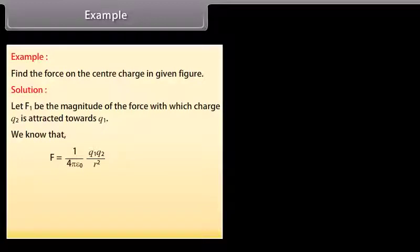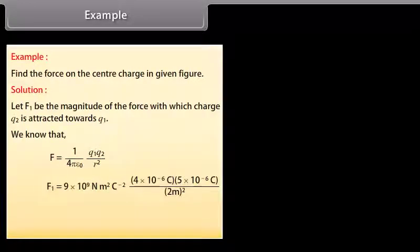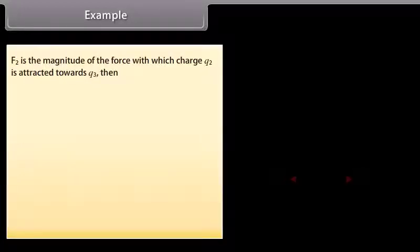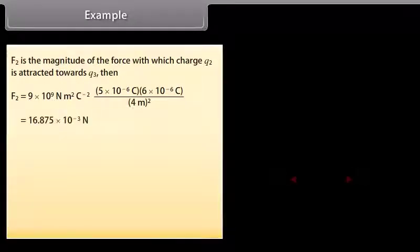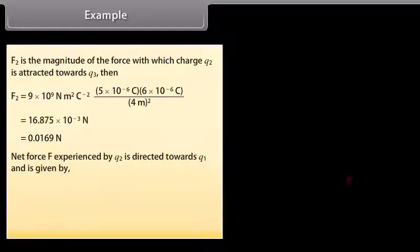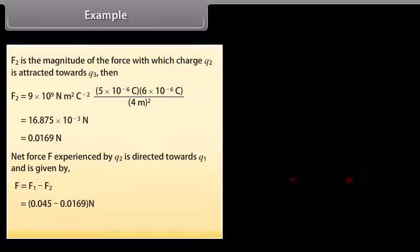Applying the equation F₁ = (1/4πε₀) × q₁q₂/r², we get F₁ = 45 × 10⁻³ N = 0.045 N. F₂, the magnitude of the force with which charge q₂ is attracted to q₃, gives F₂ = 16.875 × 10⁻³ N = 0.0169 N. The net force F experienced by q₂ is directed towards q₁ and is given by F = F₁ − F₂ = 0.045 − 0.0169 = 0.0281 N.